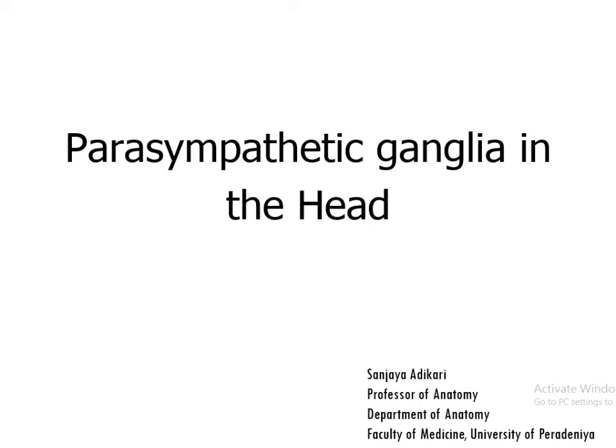The peripheral part of the sympathetic and parasympathetic nervous systems consists of pre-ganglionic fibers, post-ganglionic fibers, and a ganglion formed by the collection of post-ganglionic fiber cell bodies.